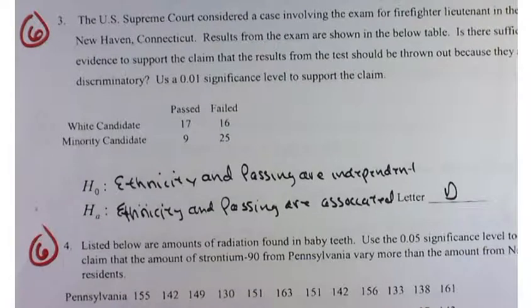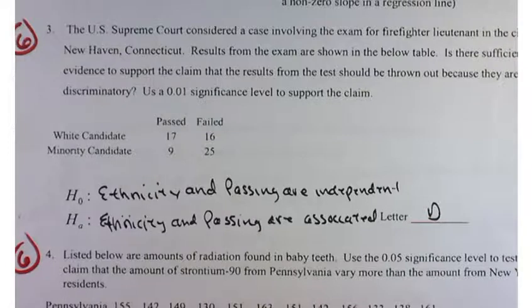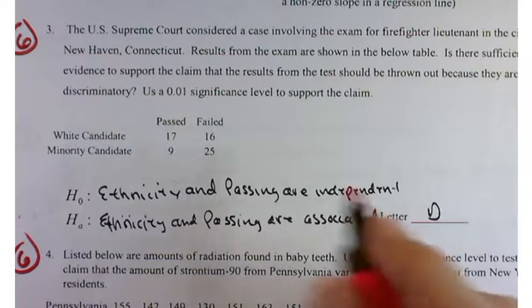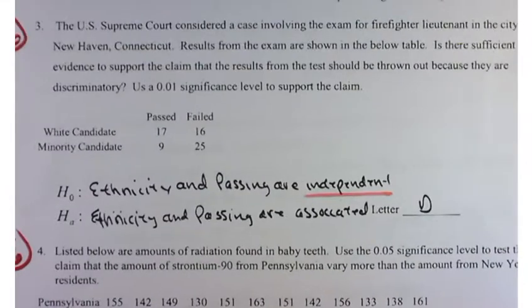One thing that's easy to mix up with a chi-squared goodness of fit test is a chi-squared test for association. They're both chi-squared tests, but they're testing much different things. In a chi-squared test for association, we want to see if two things are independent.